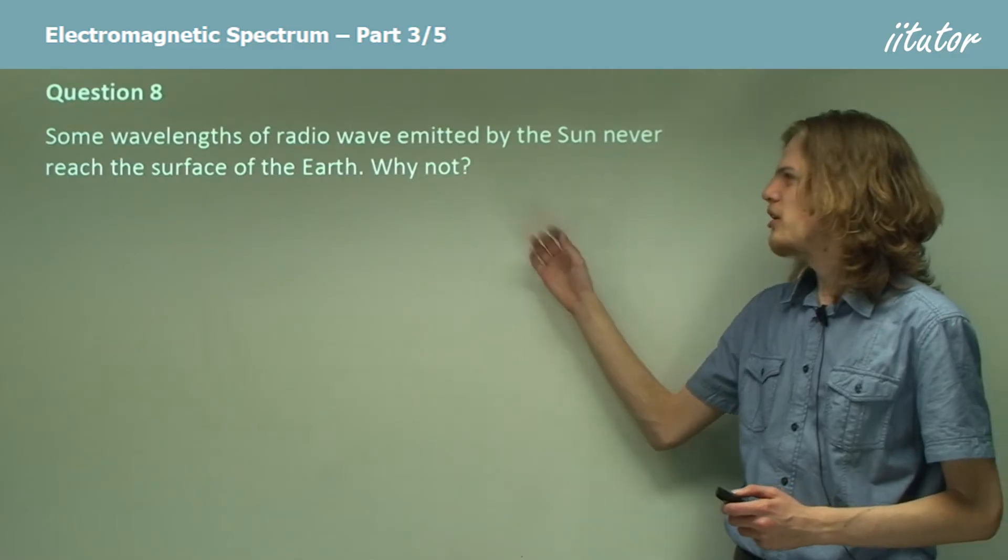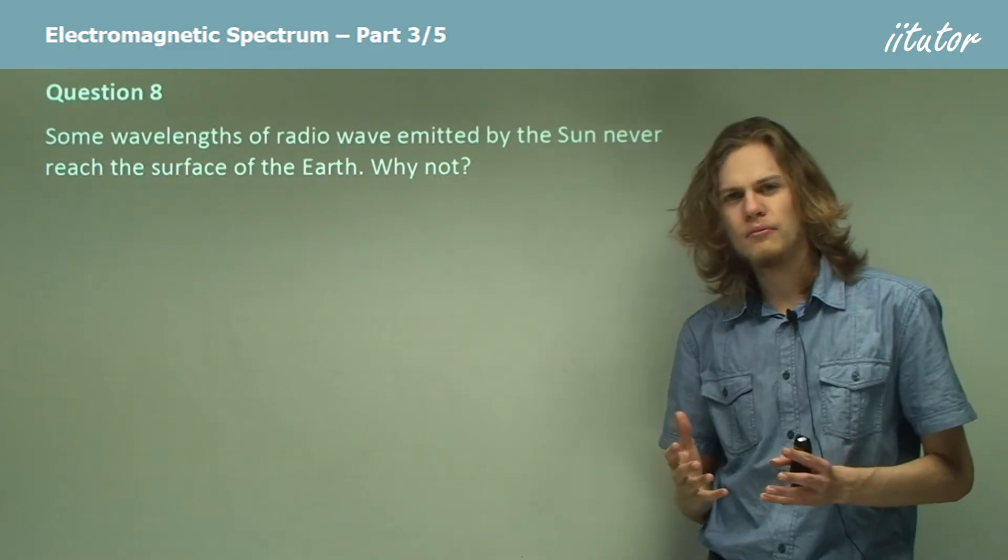Some wavelengths of radio waves emitted by the Sun never reach the surface of the Earth. Why is this?